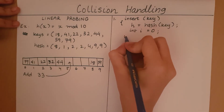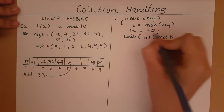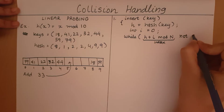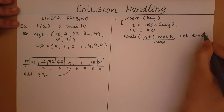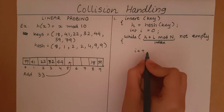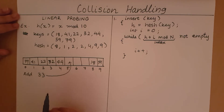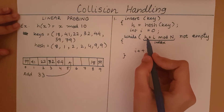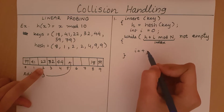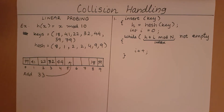Now we run a while loop: while the index (h + i) mod N is not empty, we go to the next index by incrementing i. For example, when adding 32, the hash value h equals 2. At i=0, (2+0) mod 10 = 2, which is not empty, so we increment i. At i=1, (2+1) mod 10 = 3, which was empty at that point, so we can add 32 to this index.